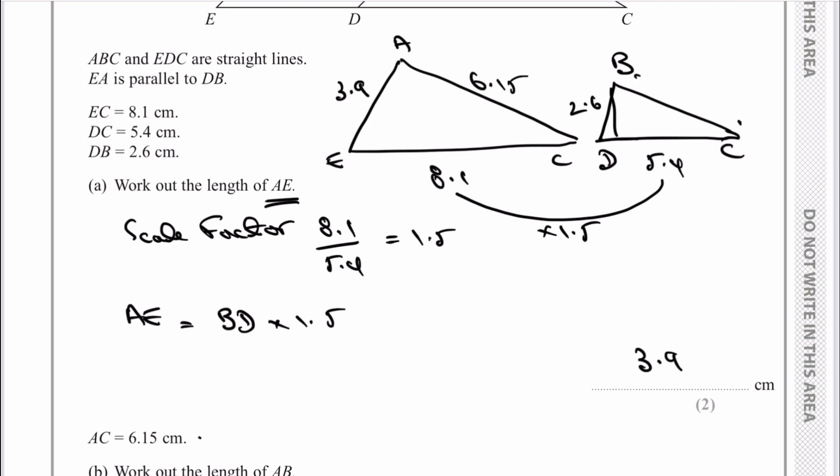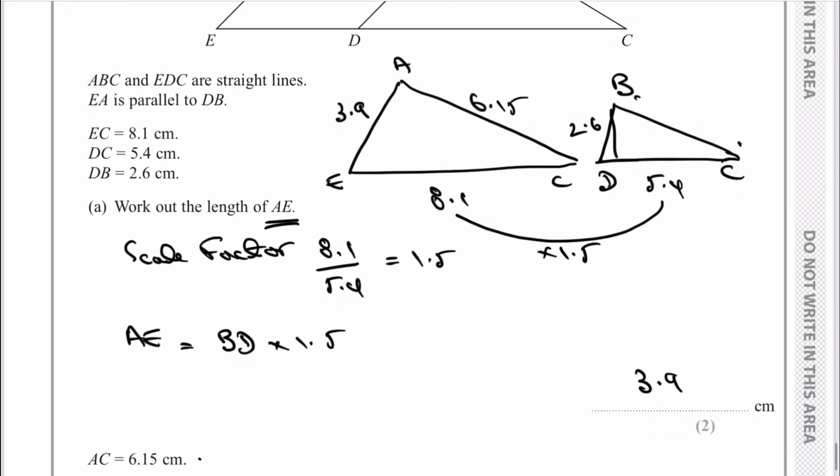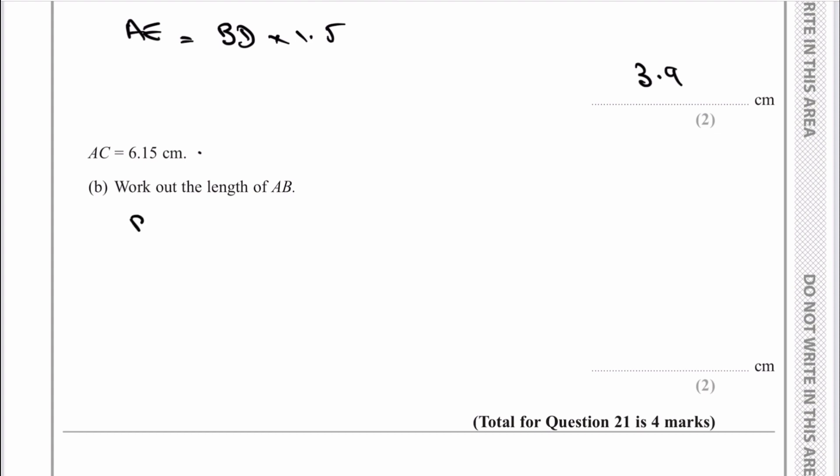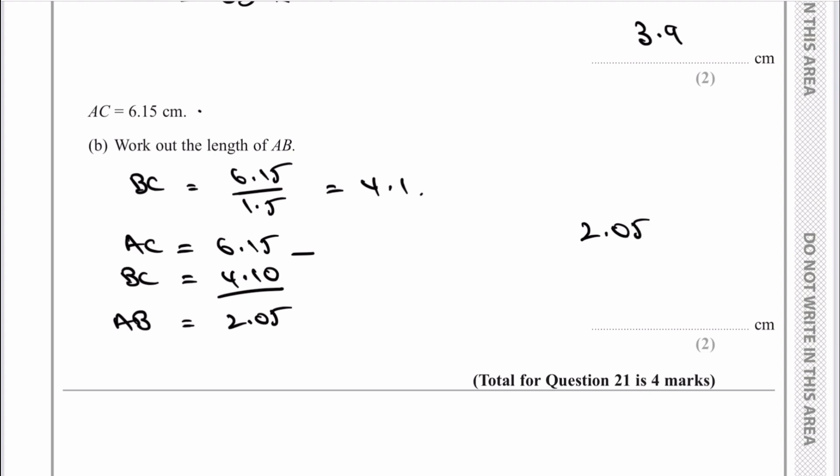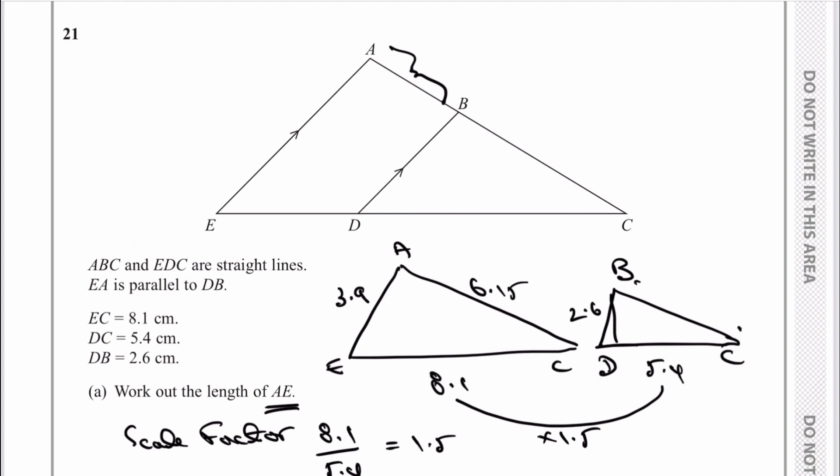Again I can use my scale factor of 1.5. BC = 6.15 ÷ 1.5 = 4.1. Now remember that AC = 6.15, so I take away BC which is 4.10, and that gives me AB = 2.05. Therefore the answer to this question is 2.05 centimeters. You need to go back to the original drawing just to make sure you're okay with that calculation.